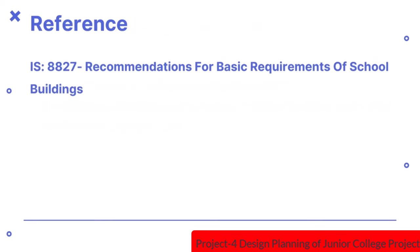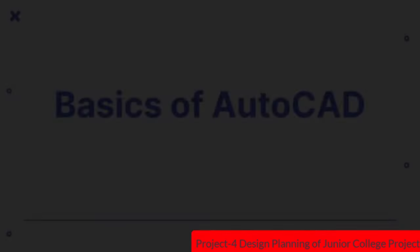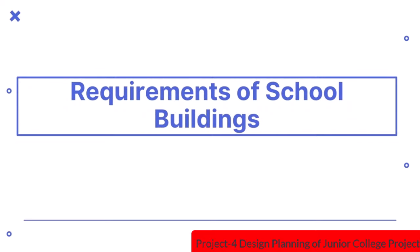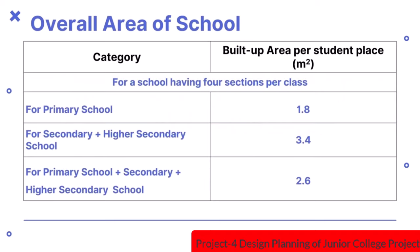The reference used for this video is IS 8827, Recommendations for Basic Requirements of School Buildings. In the next part, we will continue with the requirements of school buildings. This table gives the built-up area per student place for different categories for a school having four sections per class.